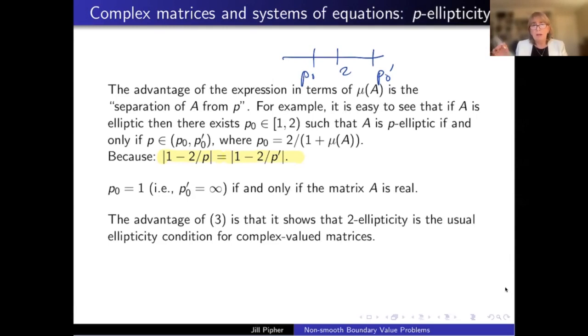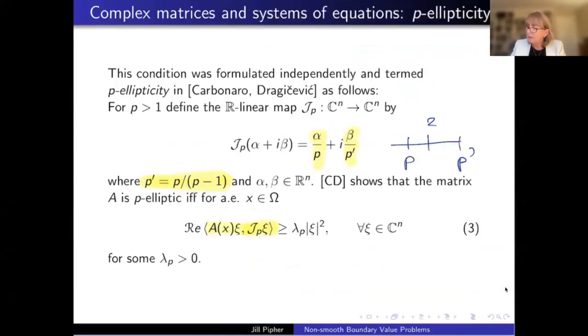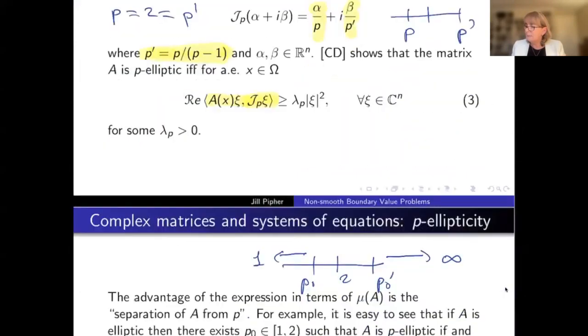So by virtue of being elliptic at one point, it is in the other point, and then all in between. Okay, so that's what you can see from the first definition. And also, if you unravel the definition of mu A a little bit more, you will see that as P not goes to one, which is the same as P not prime going to infinity, that the matrix becomes closer and closer to being real. And so in fact, P not is equal to one if and only if the matrix is real. So this is a very precise measurement of how far your matrix is from being real in some sense that has to do with forming inner products. Now, the advantage of this condition, however, is that when P is equal to two, so is P prime. And so this condition is truly an extension of the classical ellipticity condition, which is the same as this two ellipticity that I've defined. So P ellipticity is a true extension of this classical ellipticity.